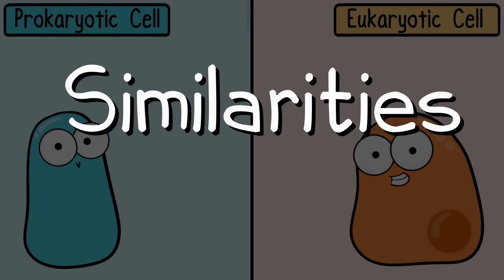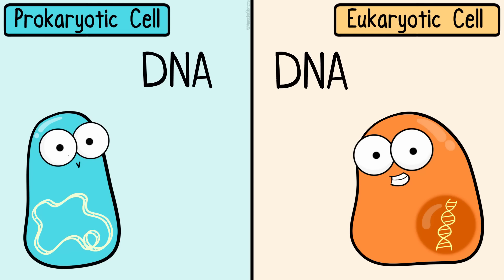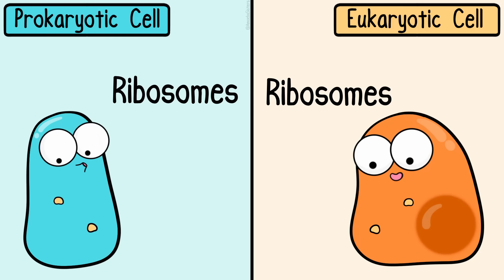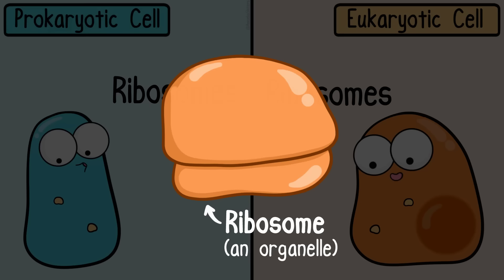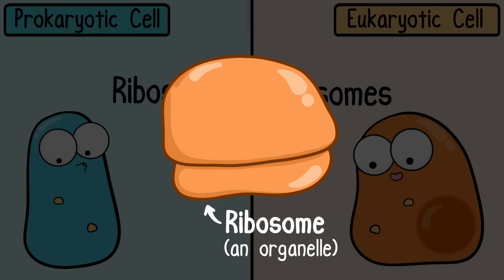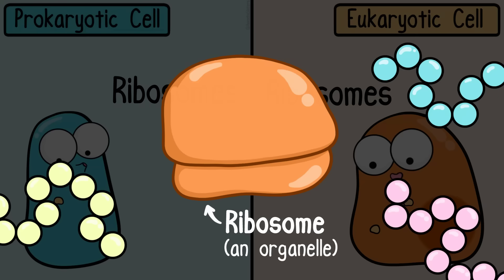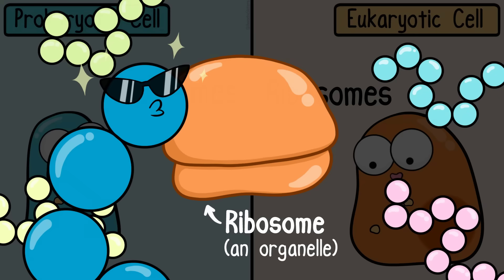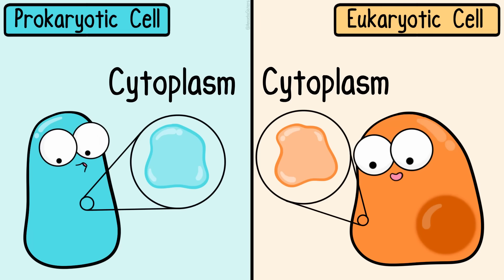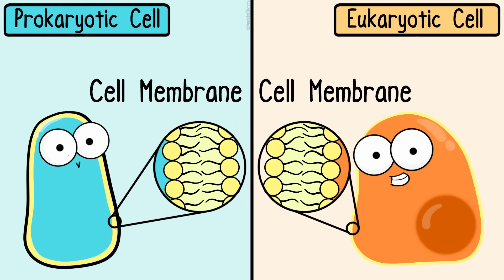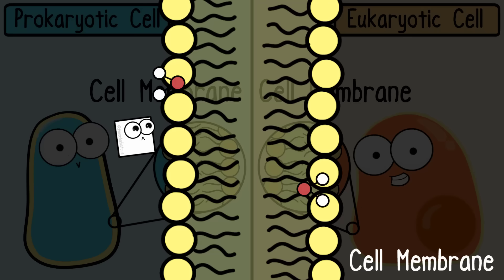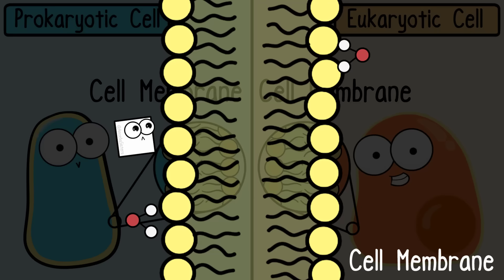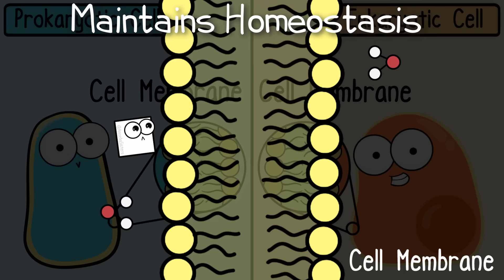Prokaryotic cells and eukaryotic cells do have a lot in common. Both have DNA, which is critical because DNA is the cell's genetic material. Both have ribosomes, which are small organelles — an organelle being like a tiny organ — that have the important job of making proteins. Both cells have cytoplasm, the jelly fluid within cells, and both have a cell membrane, also known as a plasma membrane, which controls what goes in and out of the cell, maintaining homeostasis.